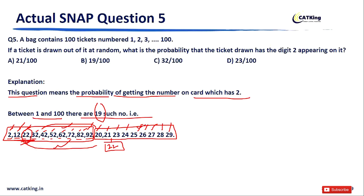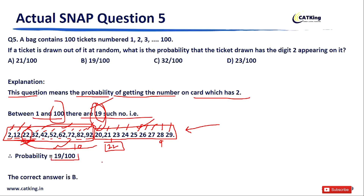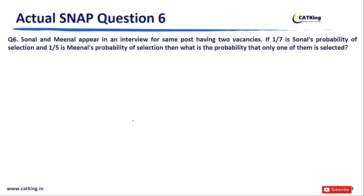The only common mistake students make is including 22 in both groups. So Group 1 has 10 numbers and Group 2 has 9 numbers, giving 19 favorable outcomes. The total outcomes are 100. Therefore the probability is 19/100, and the correct answer is Option B: 19/100.